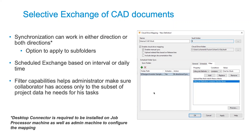So what we're doing here is just adding on to the functionality. You can start with Fusion Team and Desktop Connector, but if you have Vault Pro or you're looking at Vault Pro, this is a way of working with people on the outside of your vault and the outside of your company.